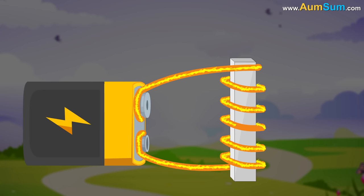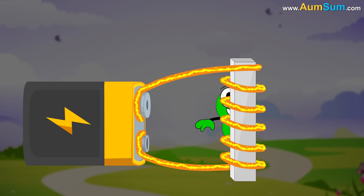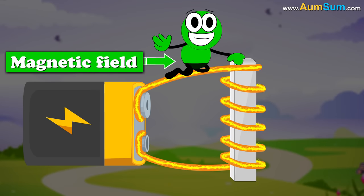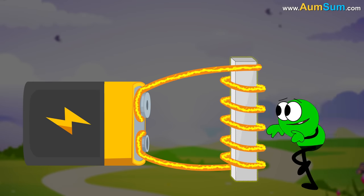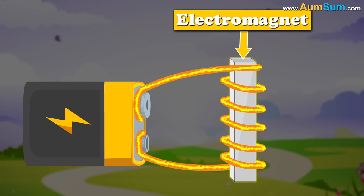This current starts flowing through the coiled wire, resulting in the creation of a magnetic field. This magnetic field magnetizes the iron metal, thus resulting in the creation of an electromagnet.